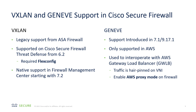VXLAN can be used to communicate between any network devices, and that's actually been supported for a long time with the ASA firewall, and even with the Cisco Secure Firewall Threat Defense — but it required FlexConfig to get into the data plane and manipulate the configuration. However, in the 7.2 release, native support was introduced. The role of VXLAN in clustering involves the cluster controlling and intercommunication between the nodes. GENEVE was introduced in the 7.1 release, only supported in AWS, and is used to communicate with the Gateway Load Balancer.